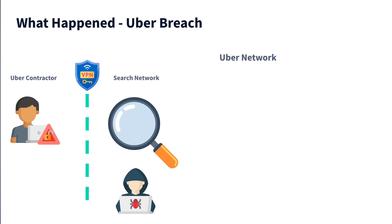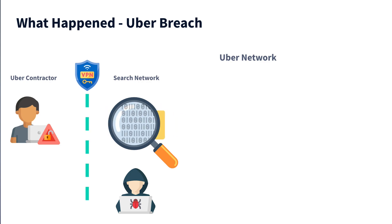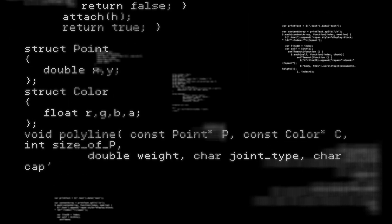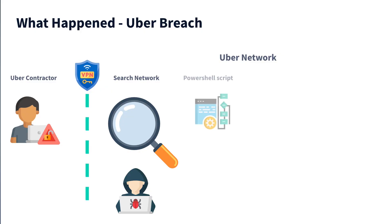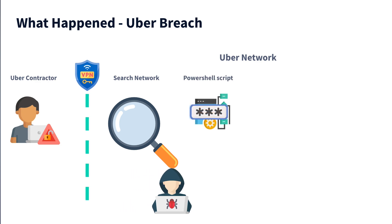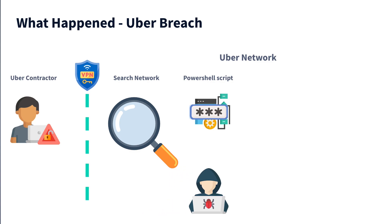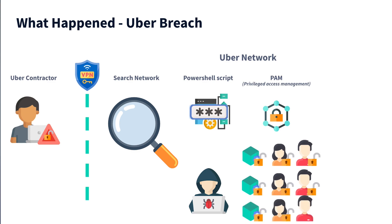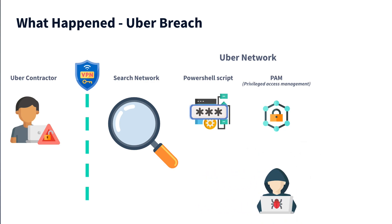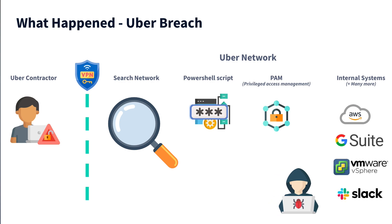Once the attacker was inside Uber's internal networks, they started searching for sensitive information. They wanted to move from the internal network into some administrative or production assets and infrastructure so they could persist the attack. They achieved this through PowerShell scripts — basically lists of instructions that execute administrative tasks on a machine. One PowerShell script was of particular interest because it contained hard-coded secrets, or plain text credentials, to a PAM system — a Privileged Access Management system — which controls all the passwords and secrets for Uber's internal systems. From here, the attacker was essentially able to compromise a huge number of systems because they had admin access to the central network that controlled it.